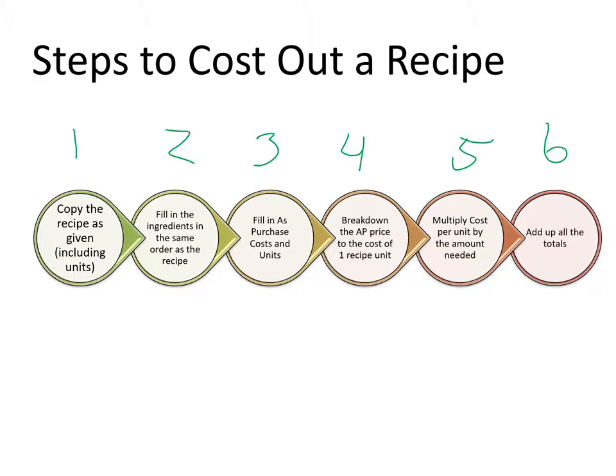Step four is really important: break down the as-purchased price to the cost of one recipe unit. That's where we do the arrow from as-purchased to recipe unit — you convert it down to one recipe unit so we can simply multiply. Multiply the cost for one unit by the amount we need. Step five: the extended cost. Step six: add up all the totals.